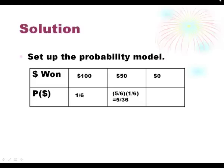Now we could win nothing and that would happen if we didn't get the 6 the first time and we didn't get the 6 the second time. And that's done by 5 out of 6 times 5 out of 6, which is 25 out of 36.